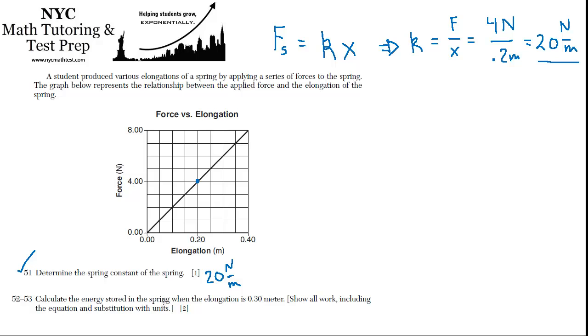Now they want us to calculate the energy stored in the spring when the elongation is 0.3 meters. So it's either been stretched or compressed by 0.3 meters. And now that spring is storing energy, potential energy.